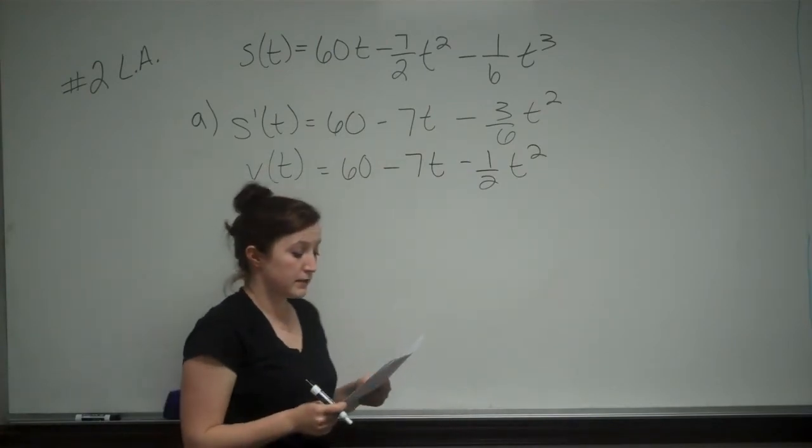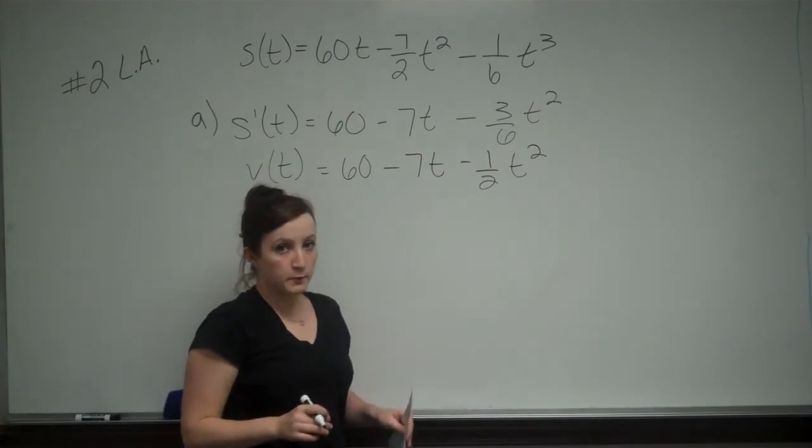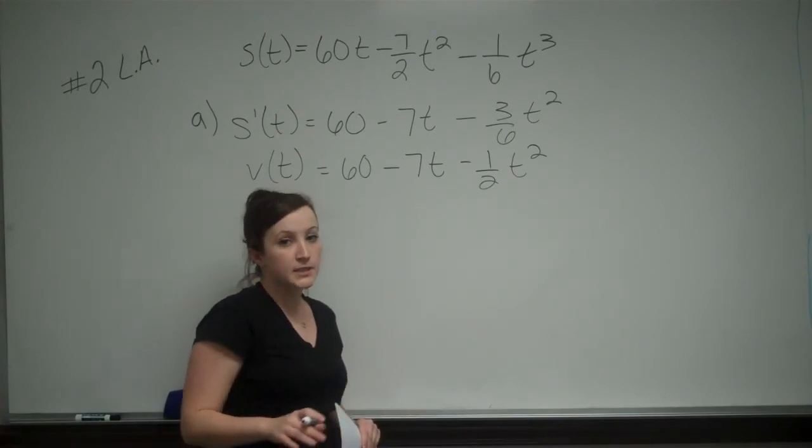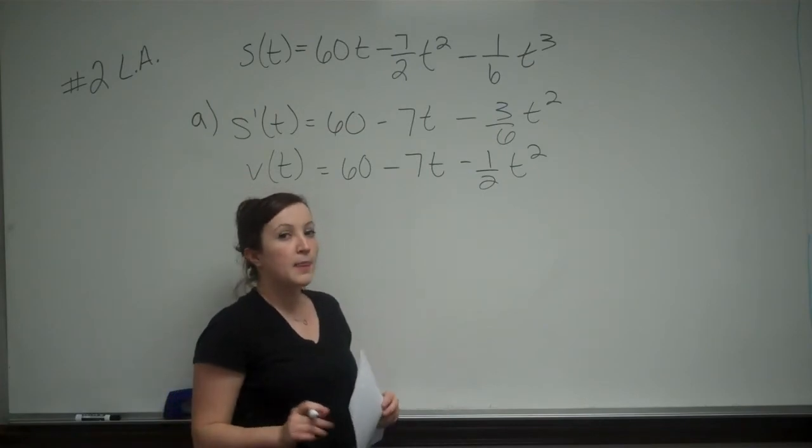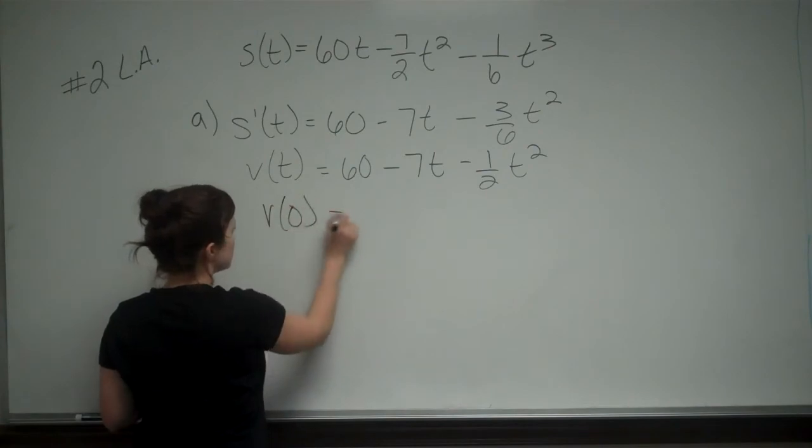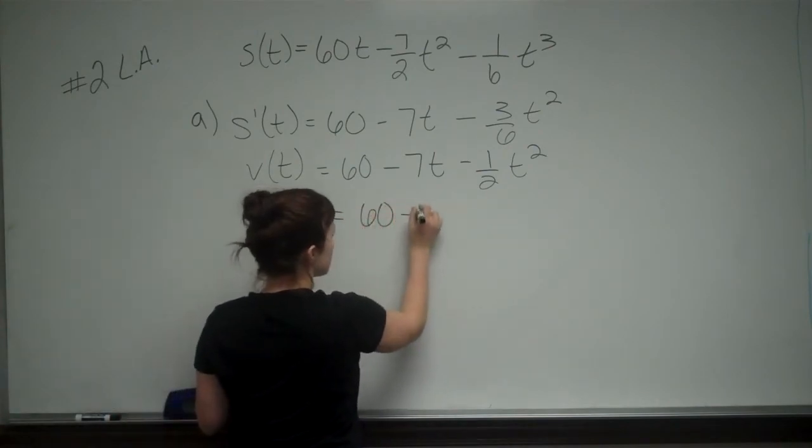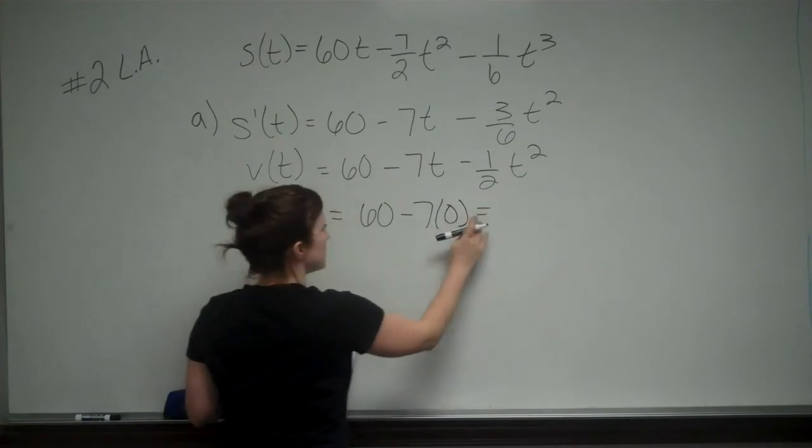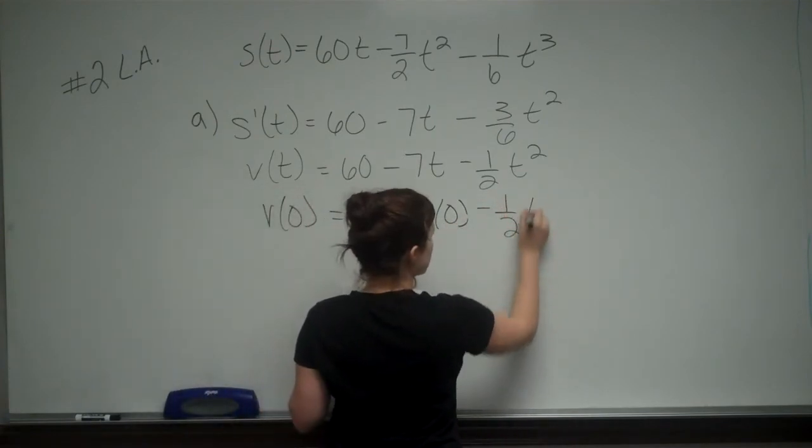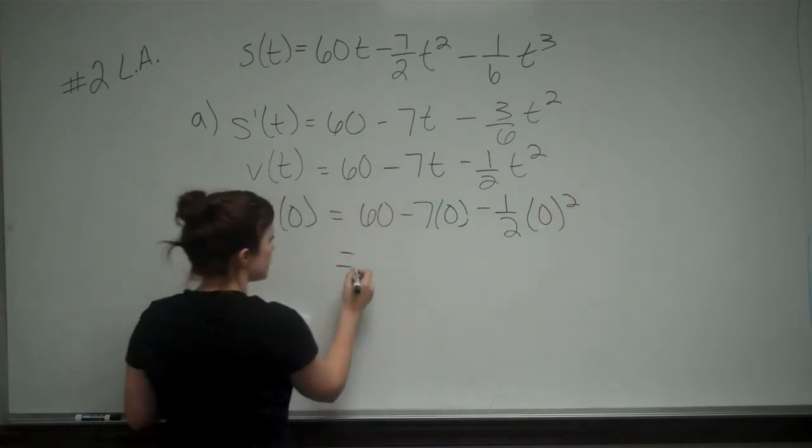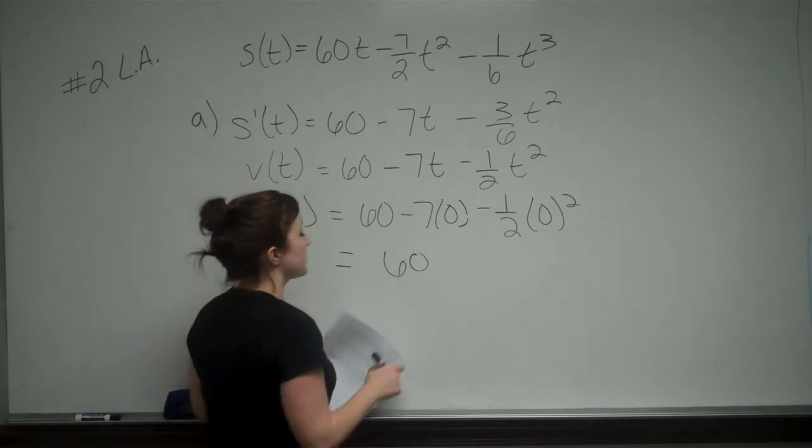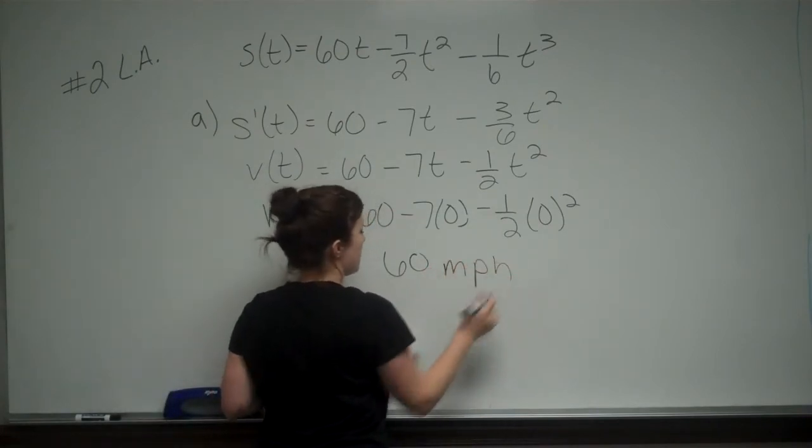Now, it wants us to find out the velocity when the brakes were first applied, and in the original question, it let us know that time T equals 0 corresponds to the time the brakes were first applied. So we're going to find V of 0. You just plug 0 in for T, and that gives me 60, and since this is velocity, we know that this is 60 miles per hour.